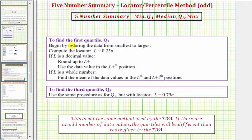To find Q1, we first want to make sure the data is in order from least to greatest. Then we compute the locator, which is L equals 0.25 times n, where n is the number of data values. If L is a decimal, we round L up to the next whole number and use the data value in this position as Q1.